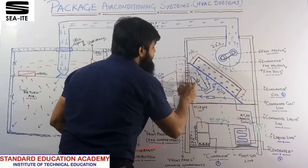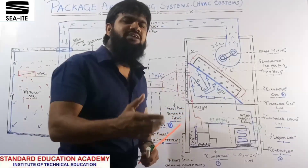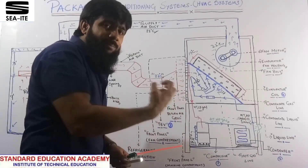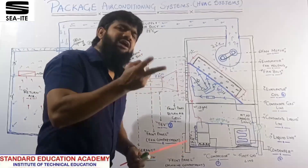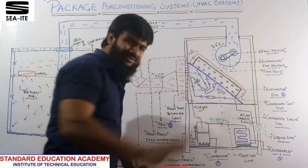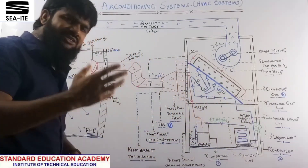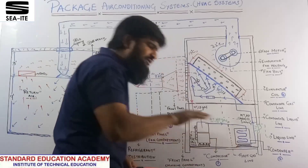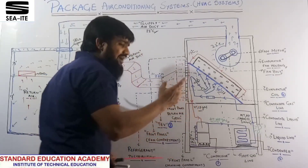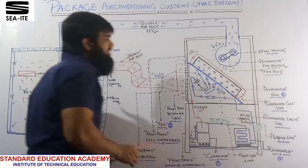This condensate liquid is sent to a liquid drier line and then to your expansion valve. The role of the expansion valve is to reduce the pressure of the refrigerant. As the refrigerant pressure decreases, the condensate liquid automatically converts to pure liquid at a rated temperature of 6°C again.